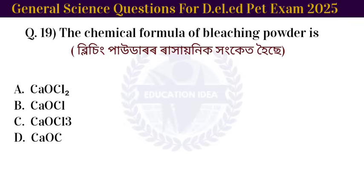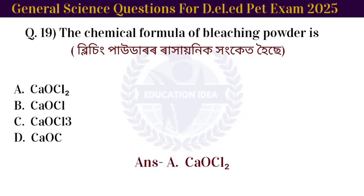Next question: the chemical formula of bleaching powder is CaOCl2.